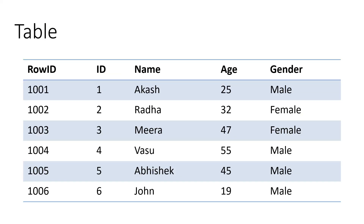Let's take an example. Consider an employee table which has four columns: id, name, age, and gender. There is also a row id column — this is something the database itself generates for every row. The database needs to refer to a row, so it generates a row id. This is not the primary key of the table; the primary key may be the id column. The row id is auto-generated by the database to identify each and every row. But when you actually store this data on disk, how would it get stored?